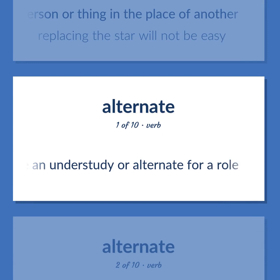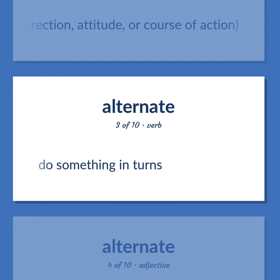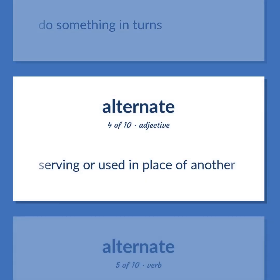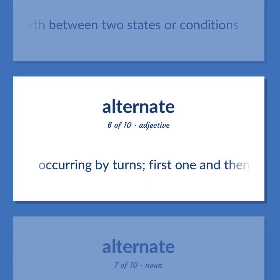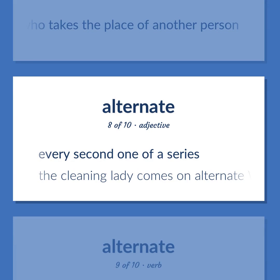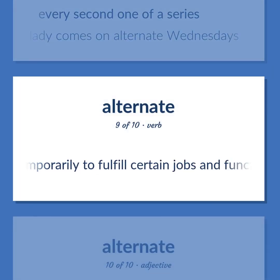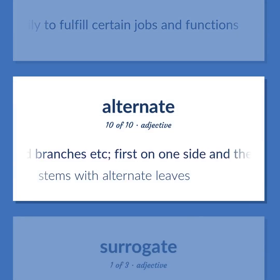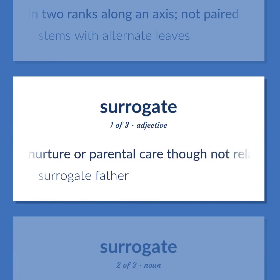Alternate: Be an understudy or alternate for a role. Reverse a direction, attitude, or course of action. Do something in turns. Serving or used in place of another. Go back and forth; swing back and forth between two states or conditions. Occurring by turns — first one and then the other. Someone who takes the place of another person. Every second one of a series. The cleaning lady comes on alternate Wednesdays. Exchange people temporarily to fulfill certain jobs and functions. Of leaves and branches: first on one side and then on the other in two ranks along an axis, not paired. Stems with alternate leaves.